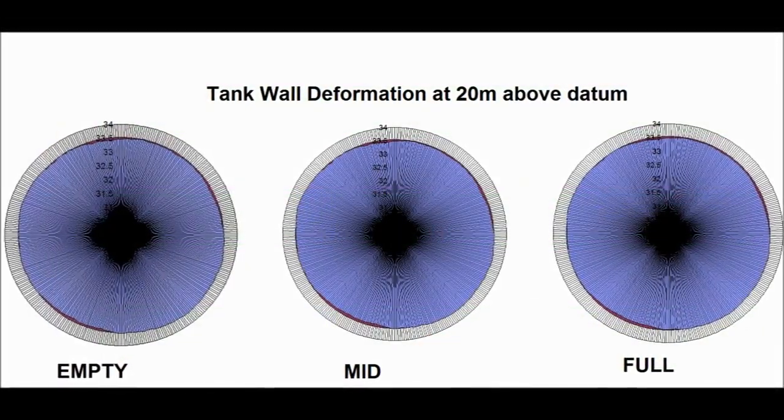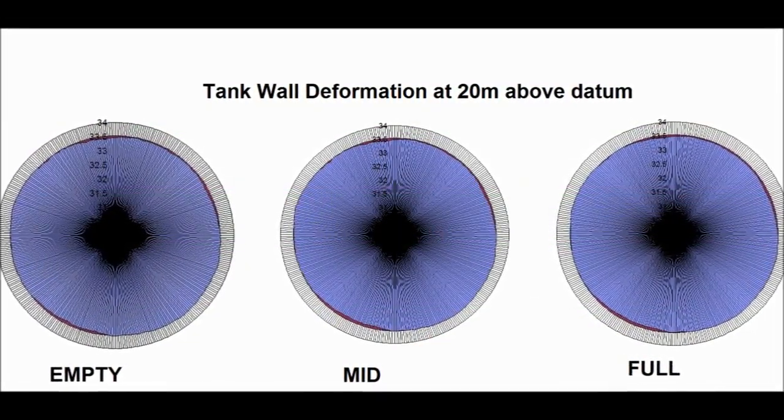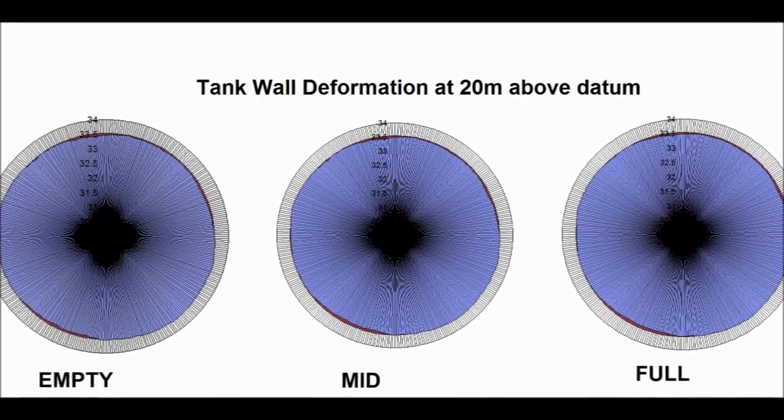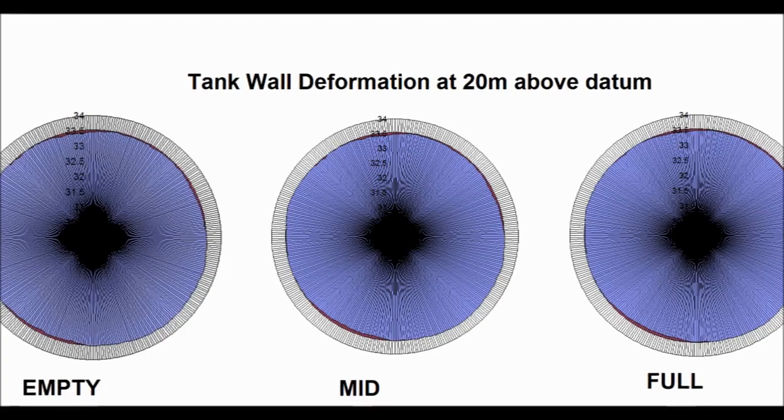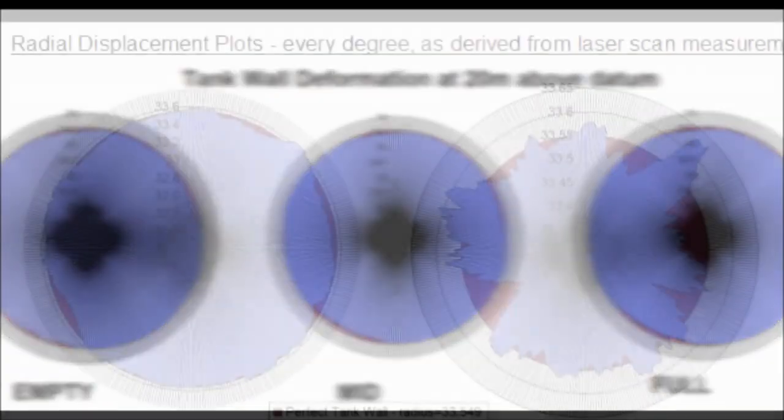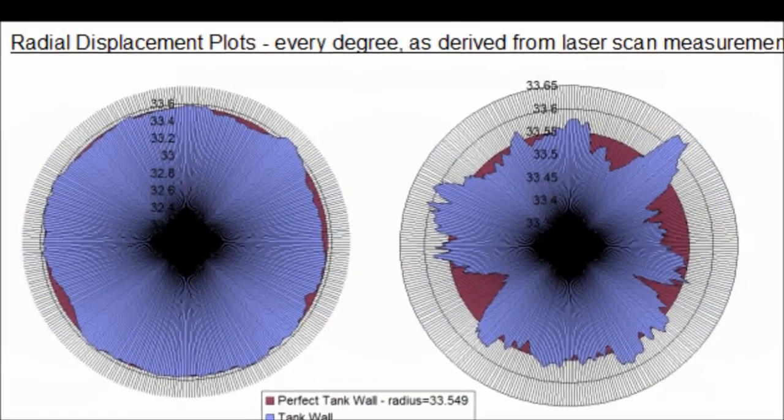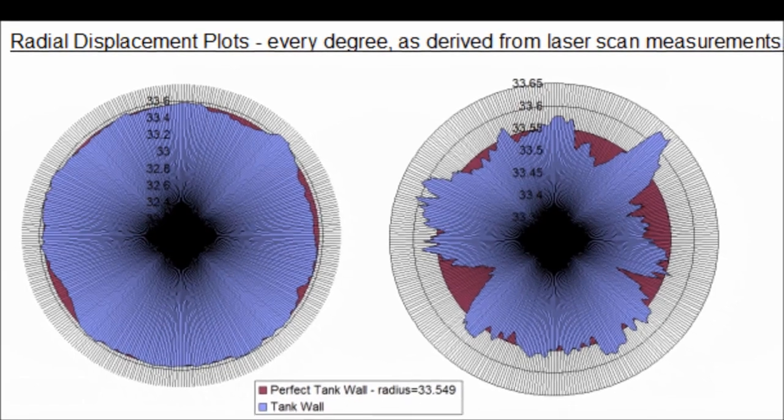Radial displacement plots, slices through the storage tank, can be created at any location. The plots here show a measurement for every degree around the tank wall, at the three different states of fill. We can exaggerate the small differences to better help visualize the deviations.